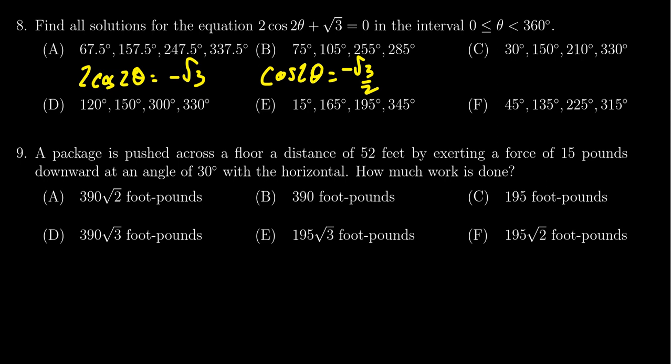And so we want to think of when does cosine equal negative root 3 over 2. It is cosine of 2θ, so we might be thinking of using a double angle identity of some kind. That'll actually just make life more complicated for us. Let's just think of it as we've changed the period.